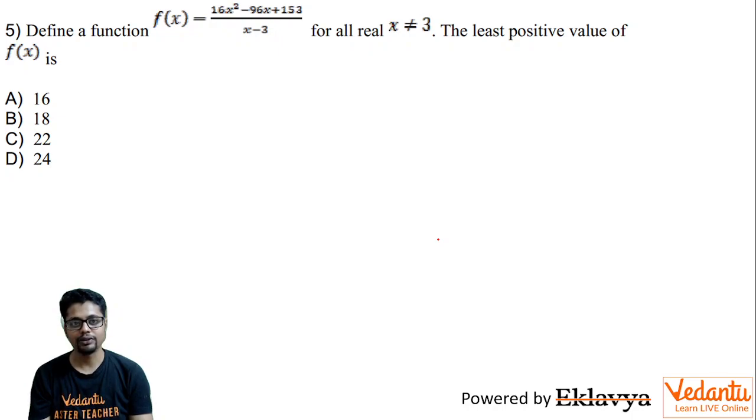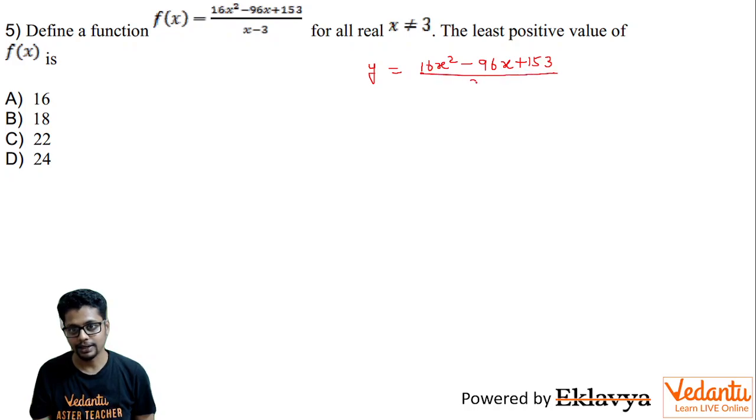The least positive value of f of x is. So here you may say this is y equal to 16x square minus 96x plus 153 divided by x minus 3. So you have 16x square minus 96 plus yx plus 153 plus 3y equal to 0.